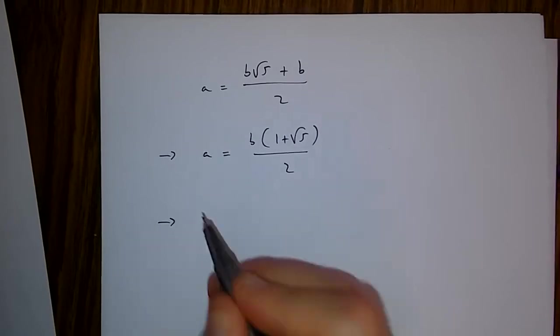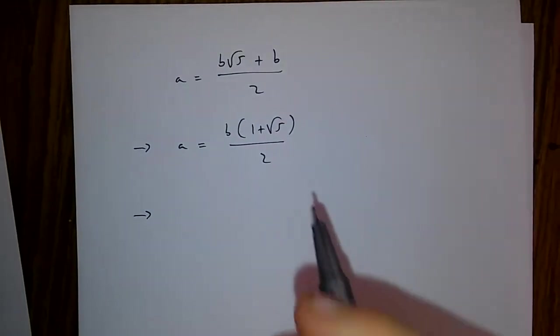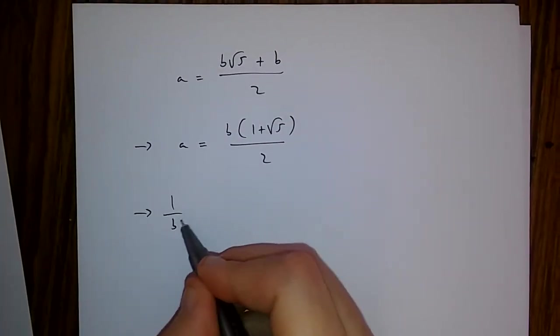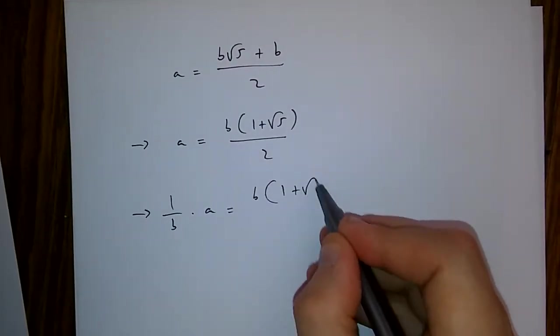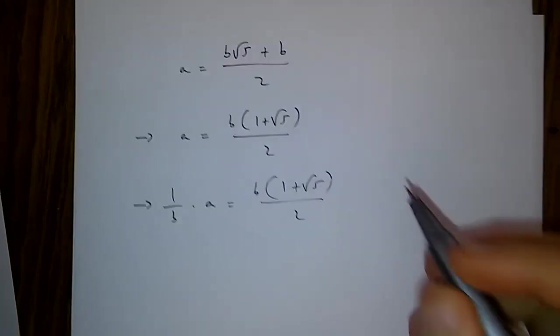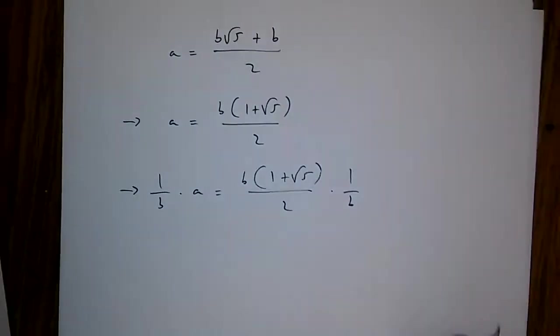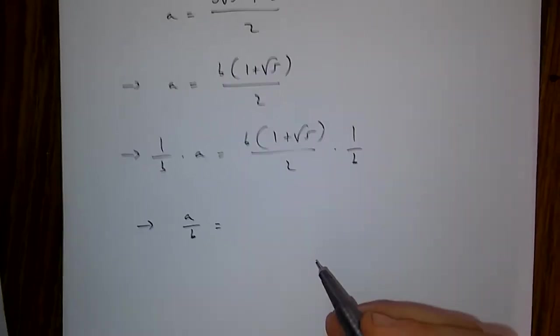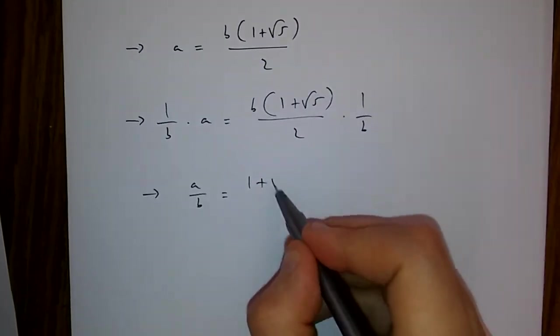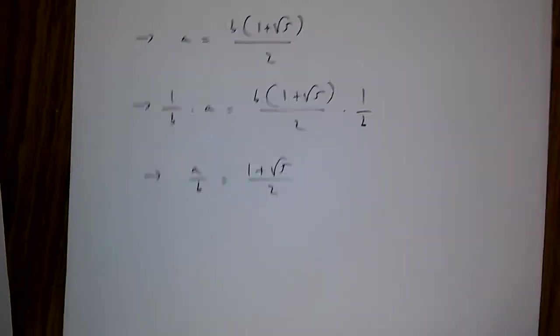Now, if we multiply both sides of this equation by 1/b, what we end up with is a/b is equal to (1 + √5)/2.